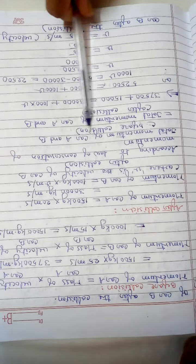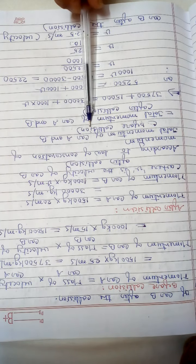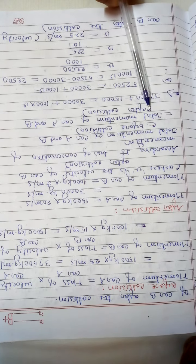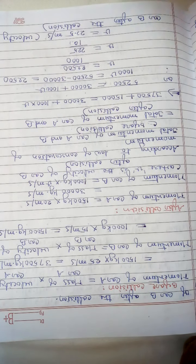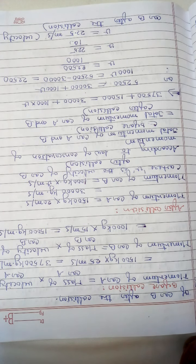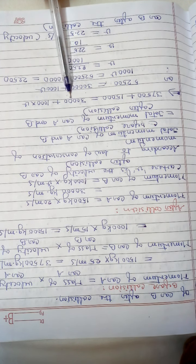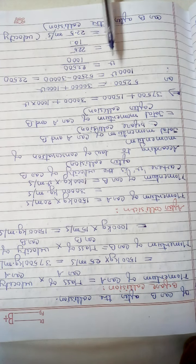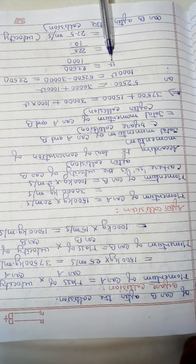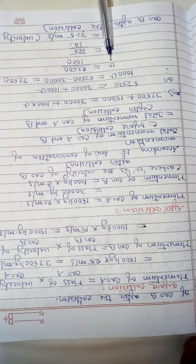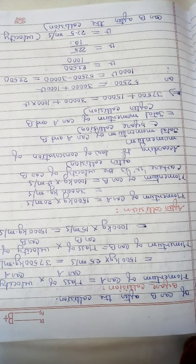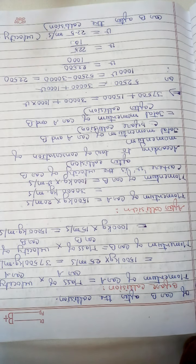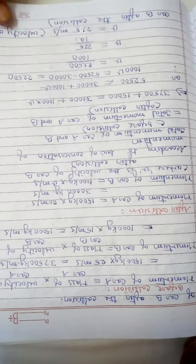According to the law of conservation of momentum, total momentum of car A and B before collision equals total momentum of car A and B after collision. Substituting the values: 37,500 plus 15,000 equals 30,000 plus 1000V, which gives V equals 22,500 upon 1000, so V equals 22.5 meters per second — the velocity of car B after the collision.